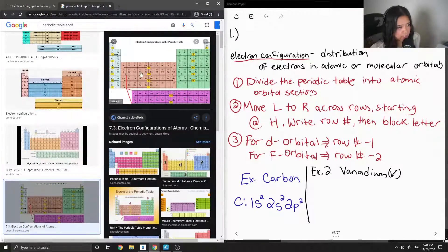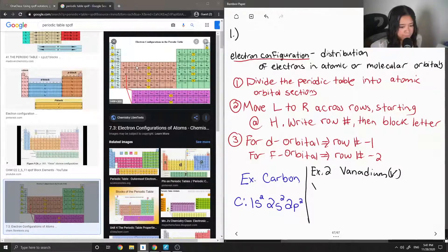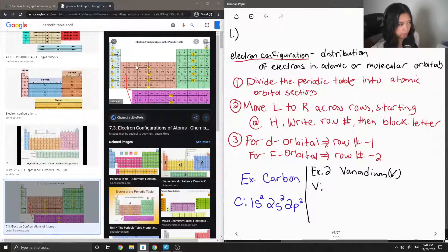Let's look at the periodic table and you can see vanadium is right here where my mouse is. And then we're going to do the same process we did for the carbon, starting from hydrogen and moving from left to right.